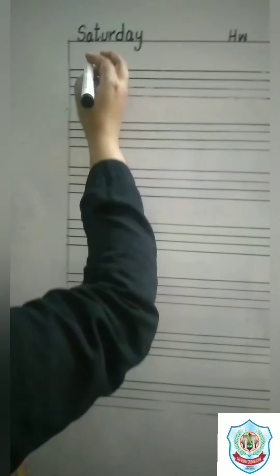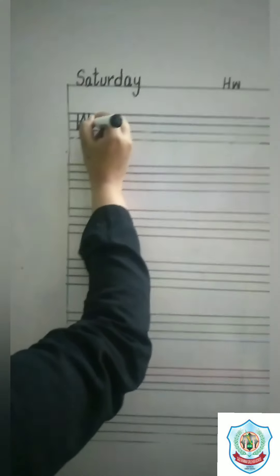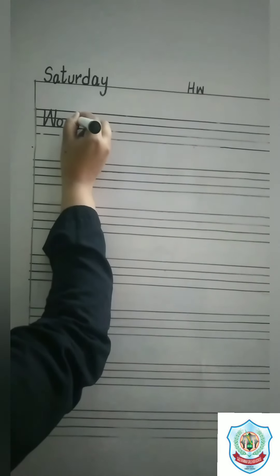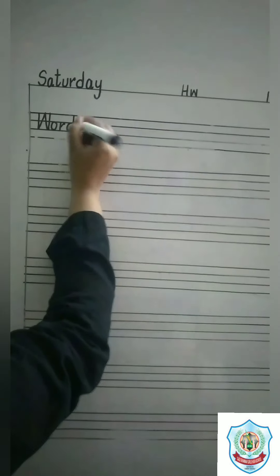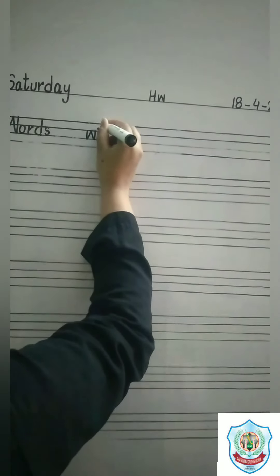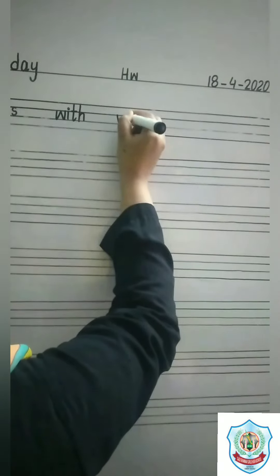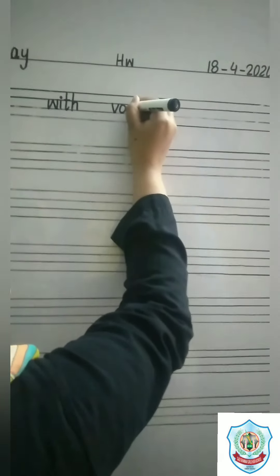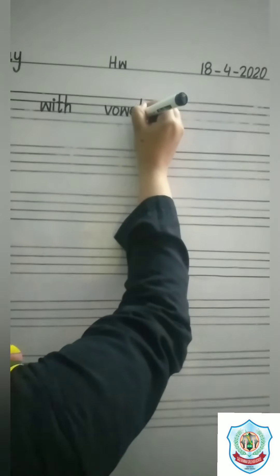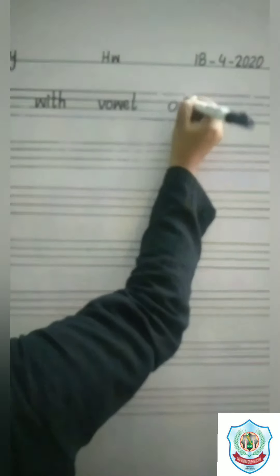Now write the statement: Words with vowel O. W, O, R, D, S. Words with vowel O.